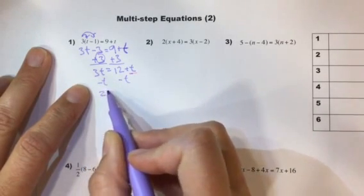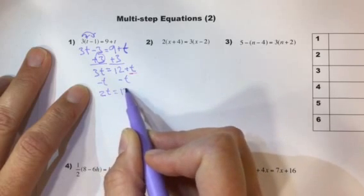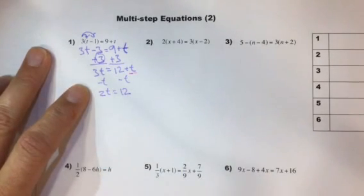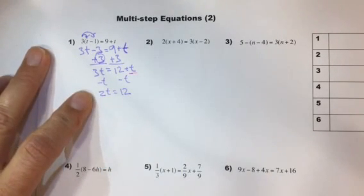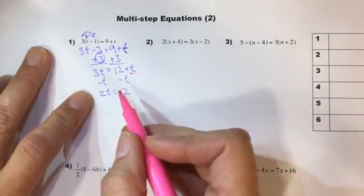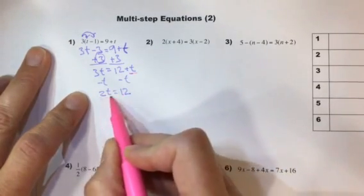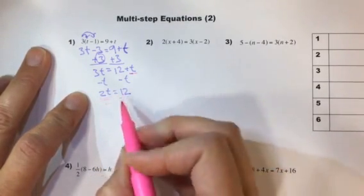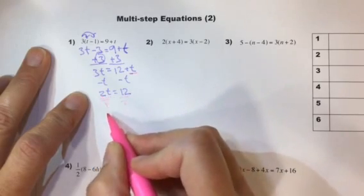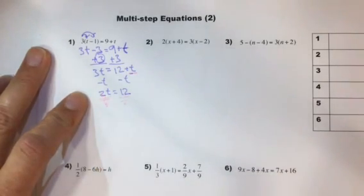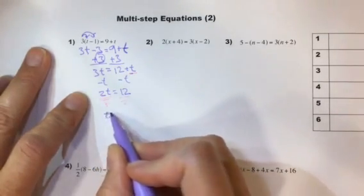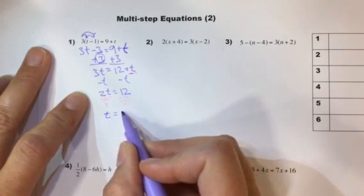So that's 2t is equal to 12 and then we know what twice of t is. We don't know what just one t is. So let's divide this by 2, divide by 2. That cancels to just 1. So that's t on this side and then 6 on this side.